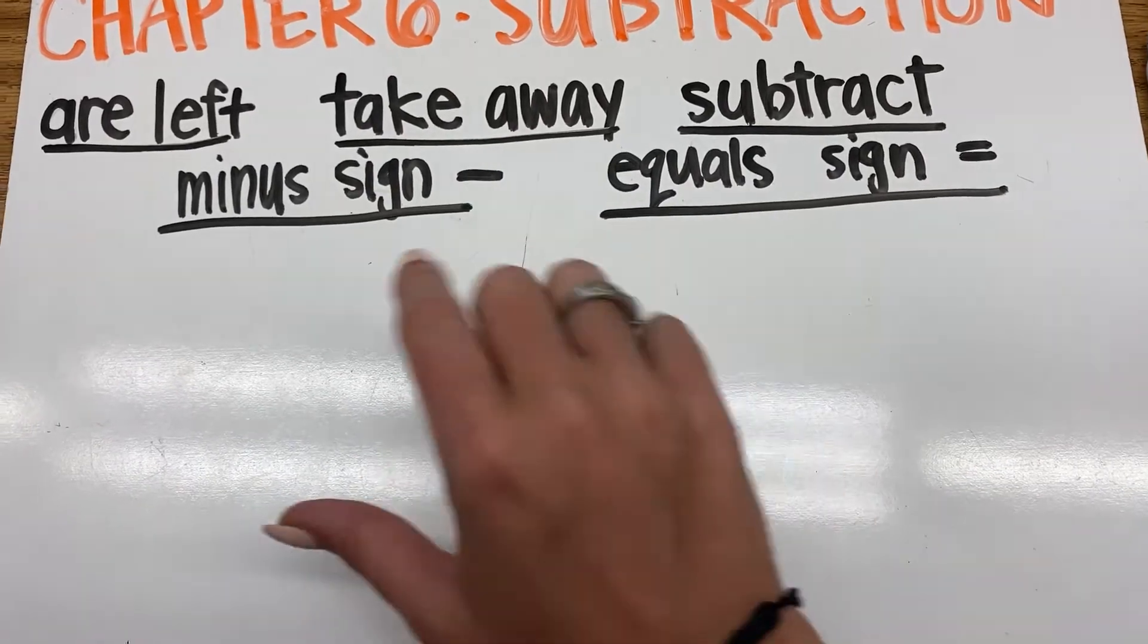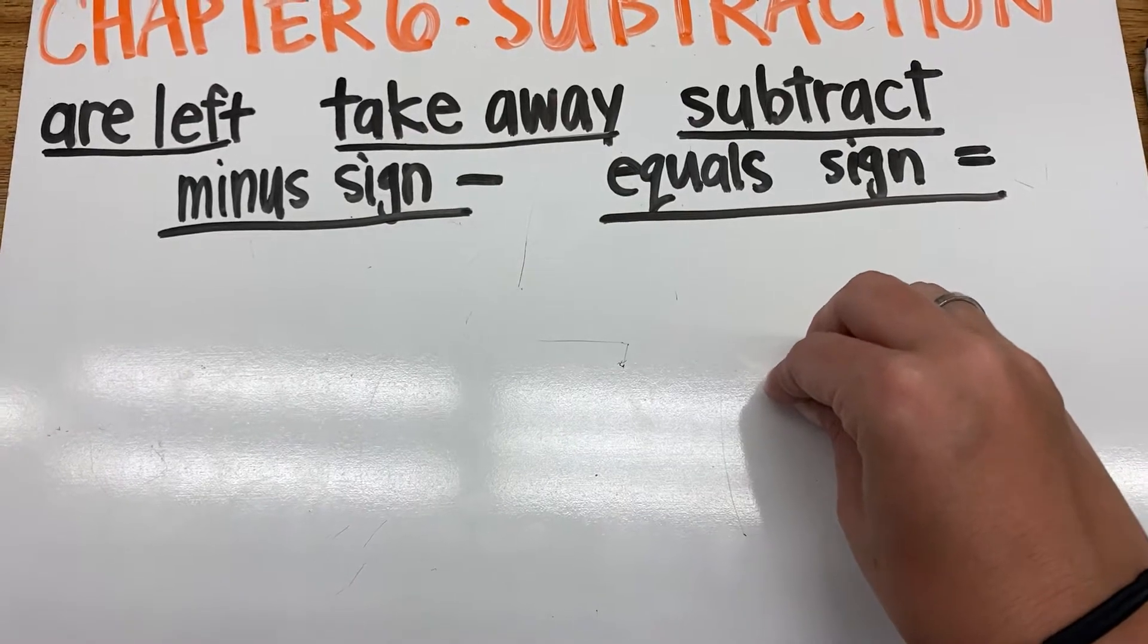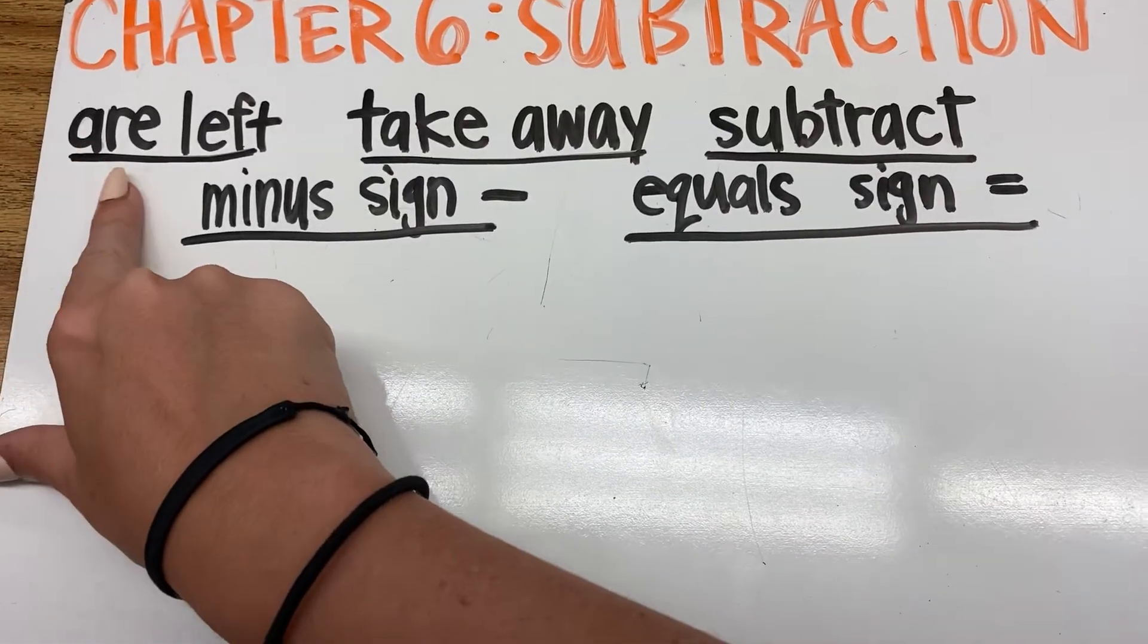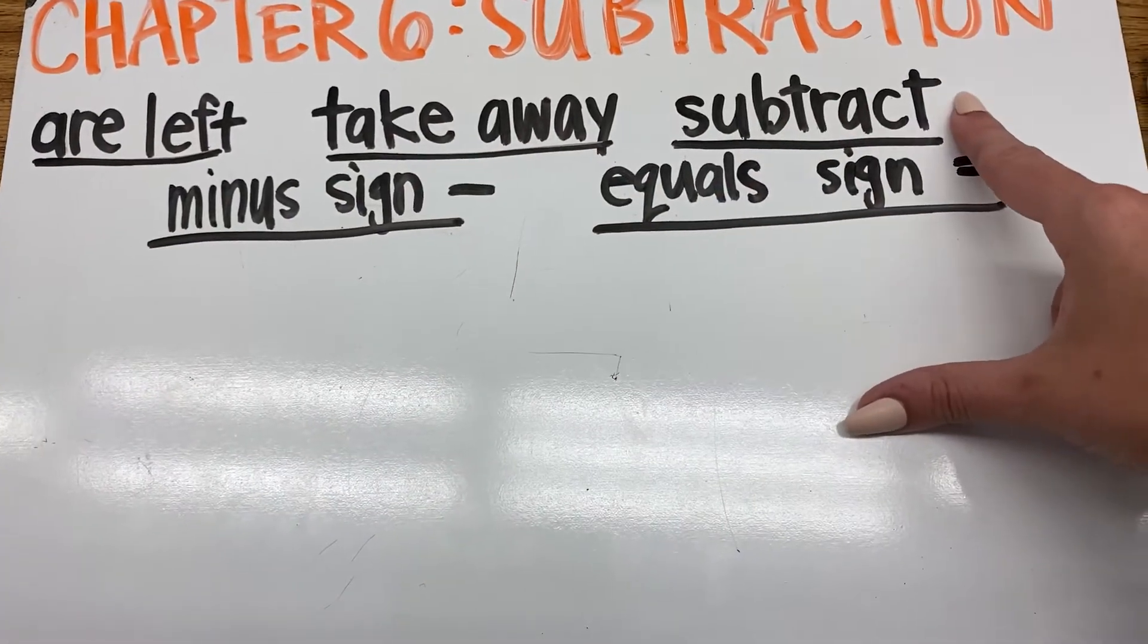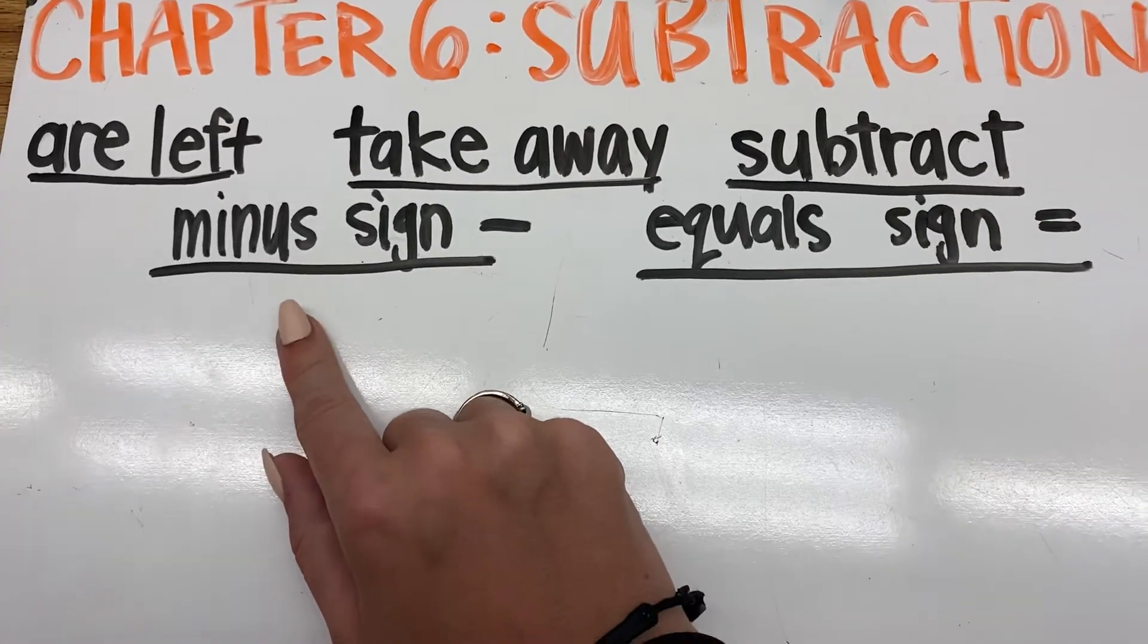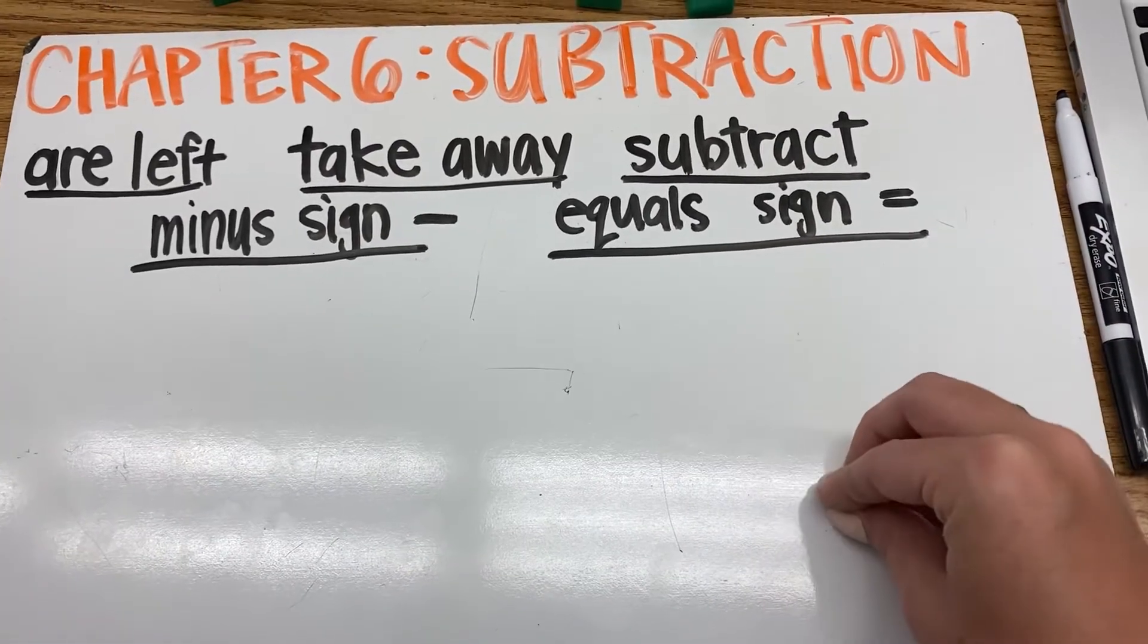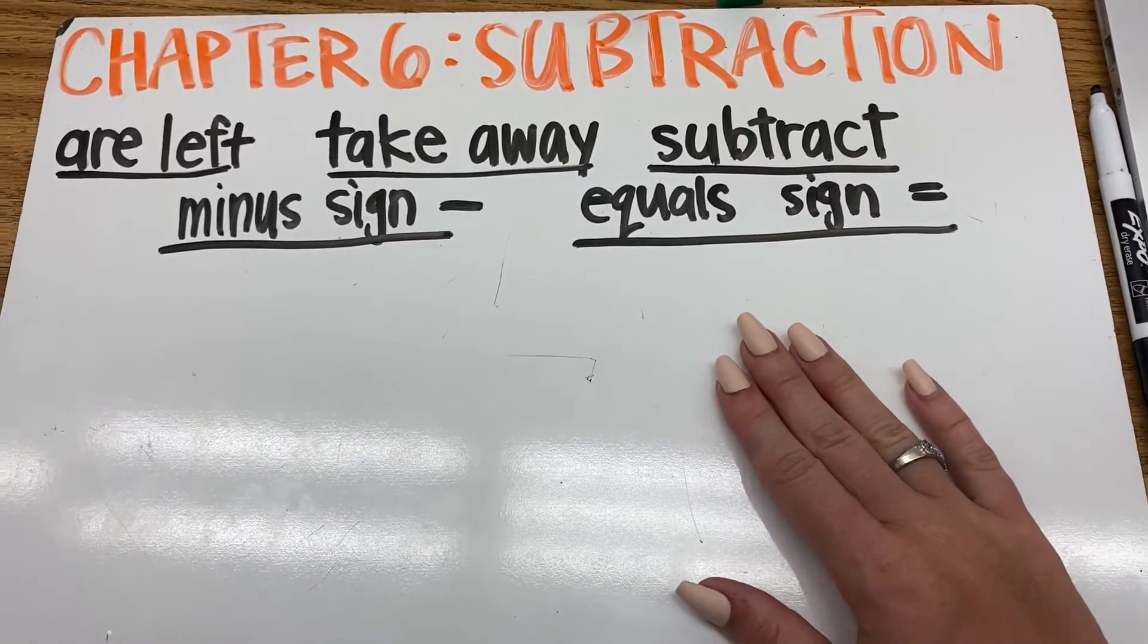Then we have take away, which is when we have a certain amount of objects and we take away some, we're going to subtract those. That's another vocabulary word. We subtract and then we have how many are left. So we're going to use these are left, take away, and subtract to do some subtraction. And then we are going to use our minus sign and our equals sign to create our subtraction sentences. This is something that we have seen in our morning work and we went through a whole subtraction chapter earlier in the year. But let's do a little review.